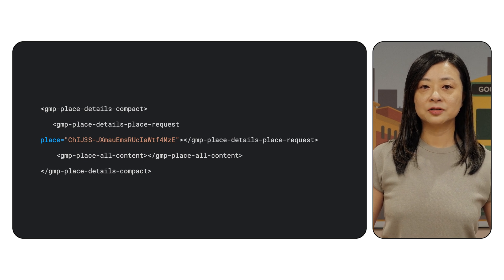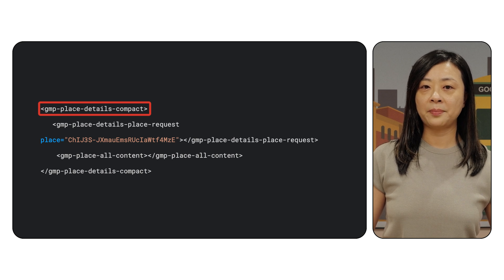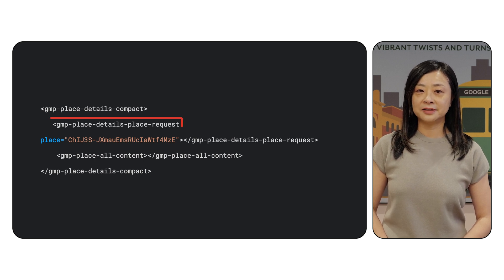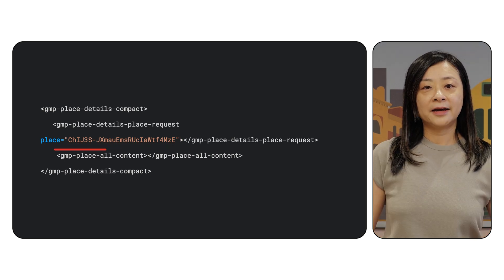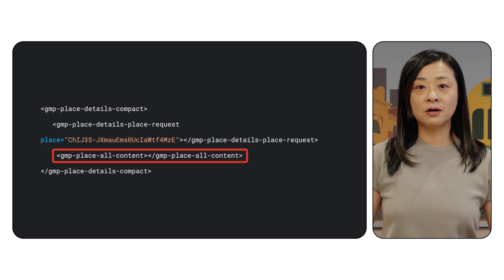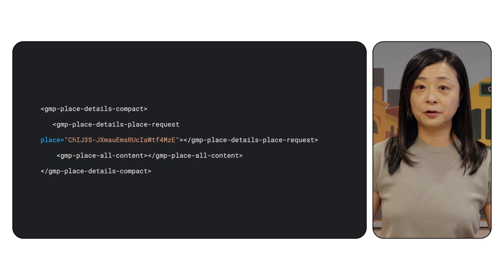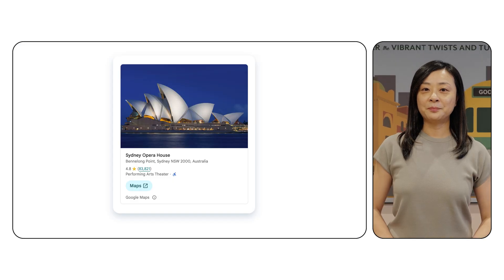To add the Place Details Compact component to your web application, add the GMP Place Details Compact element to your HTML. Within the element, add the Place Request as a child element — this string is the Place ID used to select the place. Add GMP Place or Contents as another child element to render all default details available in the compact element. Then you will get the component rendered.